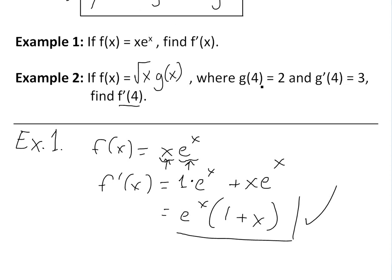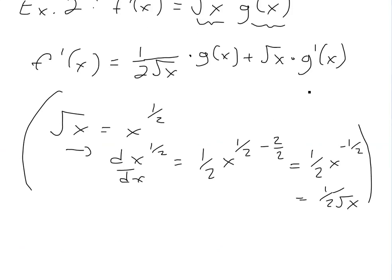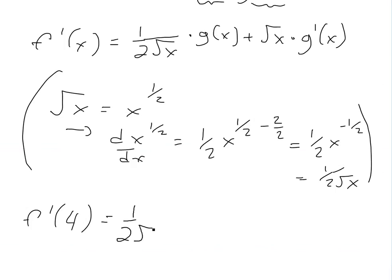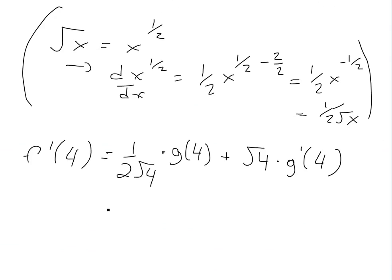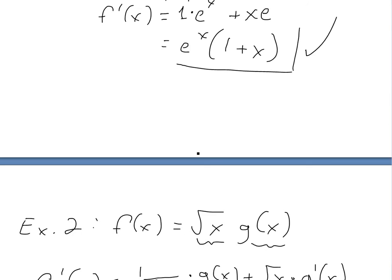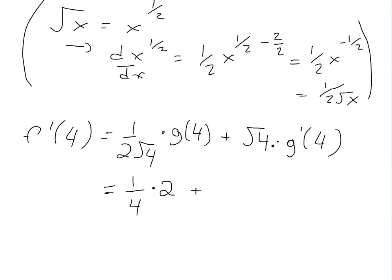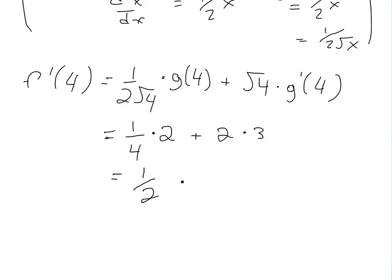Now we just plug in the values: g of 4 is 2 and g prime of 4 is 3. To find f prime of 4, we substitute: 1 over 2 times square root of 4, times g of 4, plus square root of 4 times g prime of 4. The square root of 4 is 2, so we get 1 over 2 times 2, which is 1 over 4, times 2 — giving 2 over 4 or 1 over 2. Plus 2 times 3, which is 6. So f prime of 4 equals 6.5.